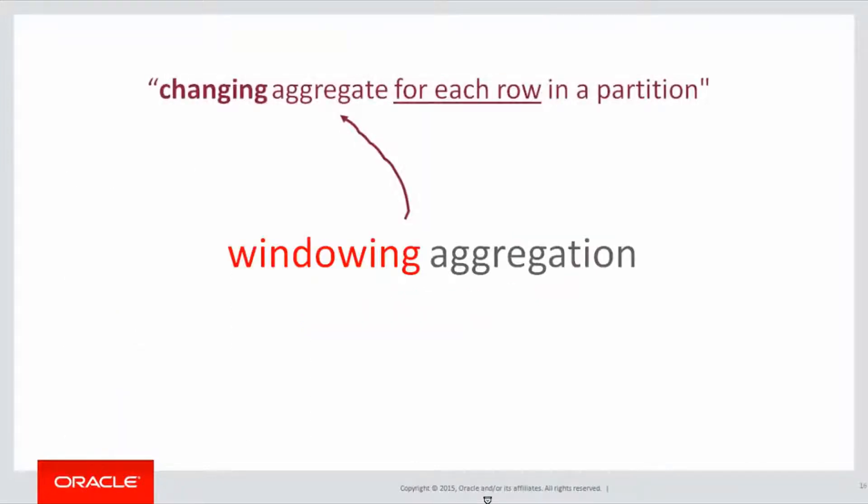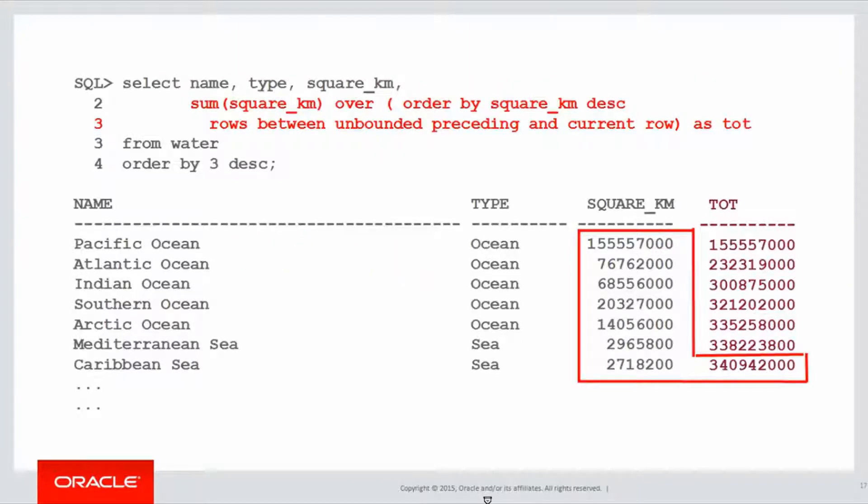And there was windowing aggregation, our introduction to the windowing clause, which was the changing aggregate for each row in a partition. And here's an example of the first windowing clause from the previous session. We did rows between unbounded preceding and current row.